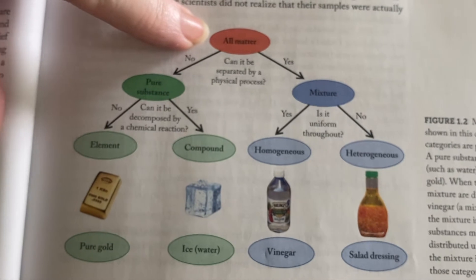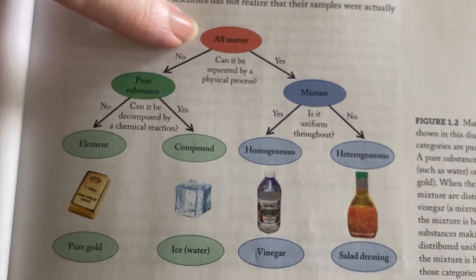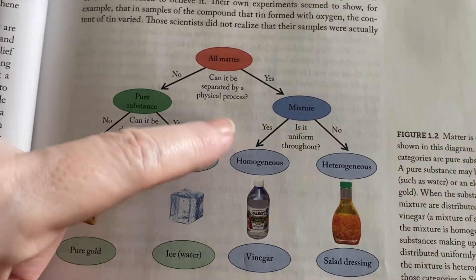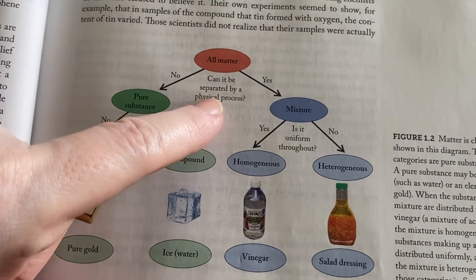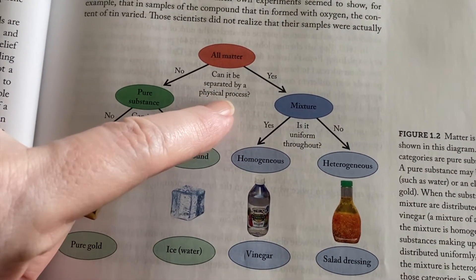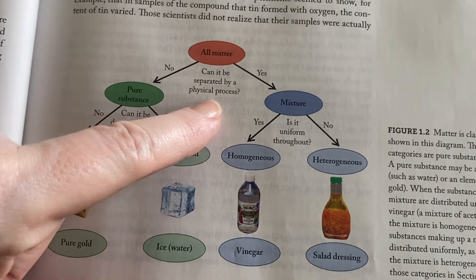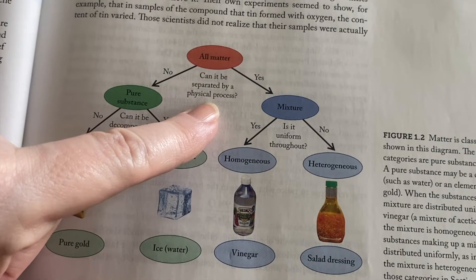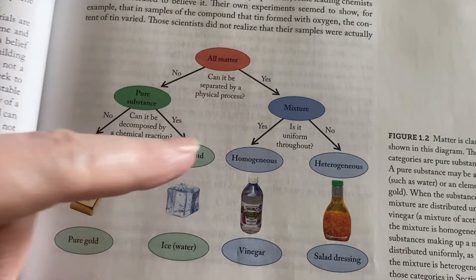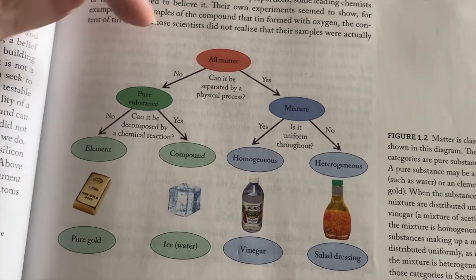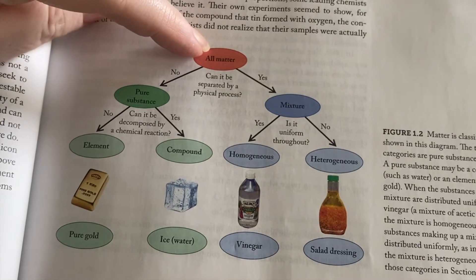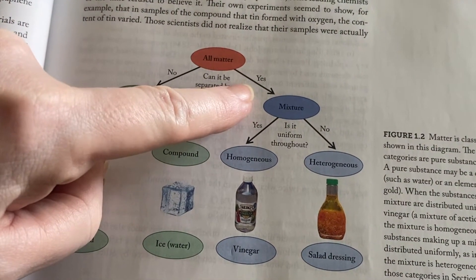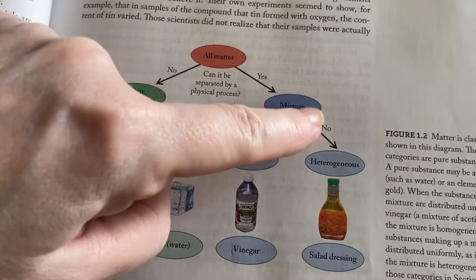This particular figure shows you things about matter. Because we can look at all sorts of matter and we can try to purify it. So if you're going to purify it, we have to separate things and the first thing to do is to use physical processes to separate it. Why physical? Because physical ones aren't going to change things. So if I have an object, maybe I can separate it by a physical process. Great. If I can, that means it was a mixture.